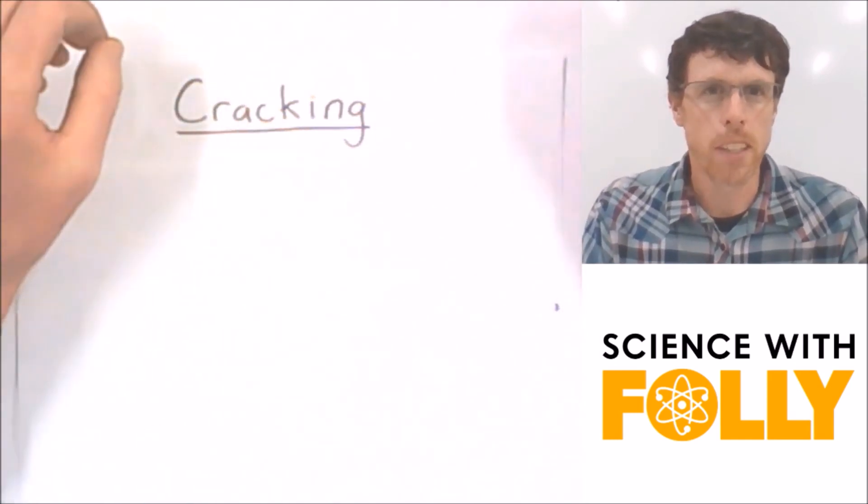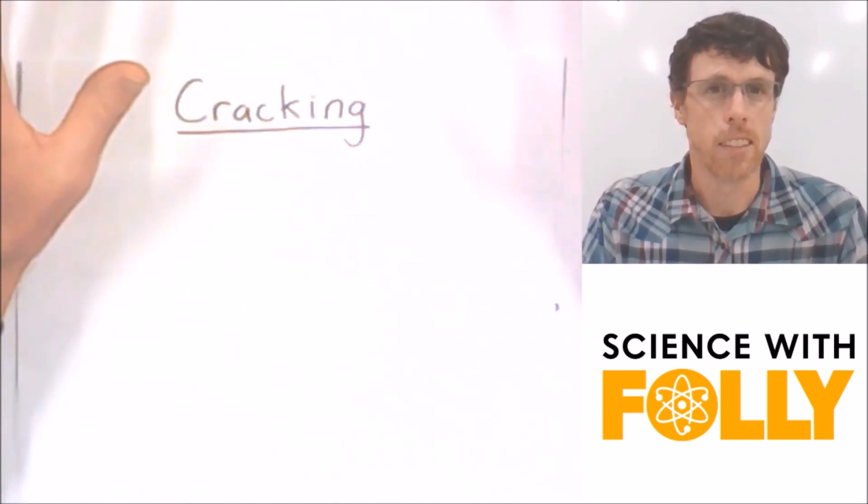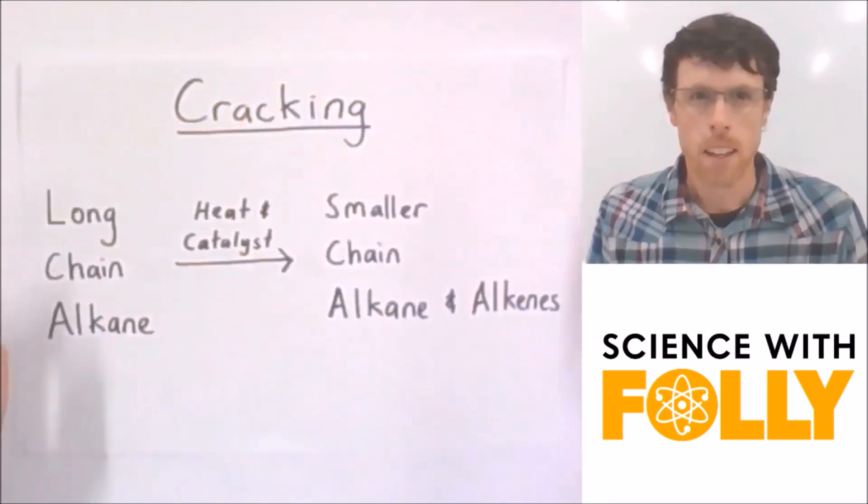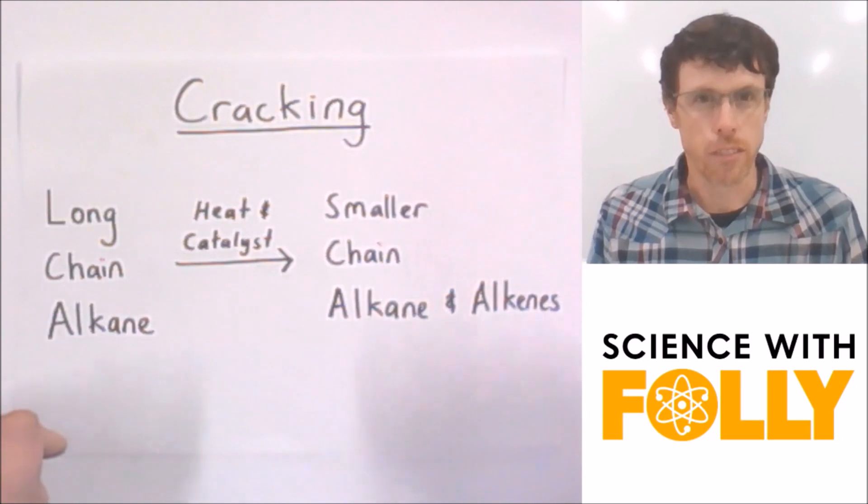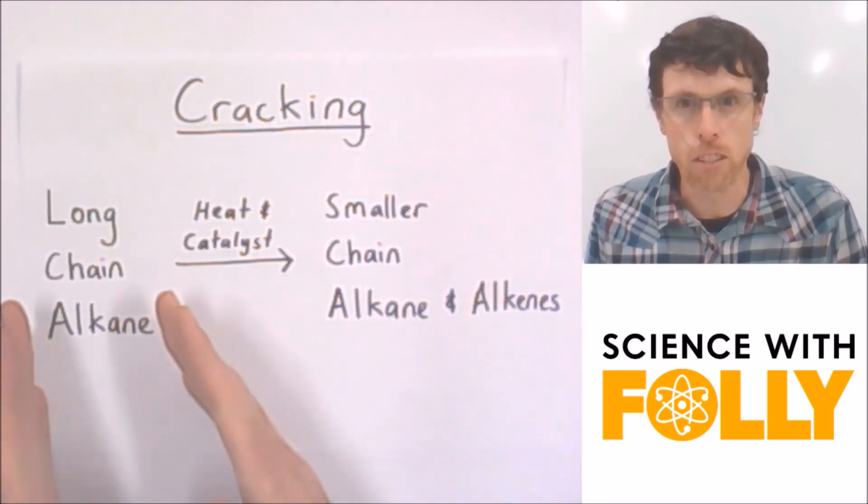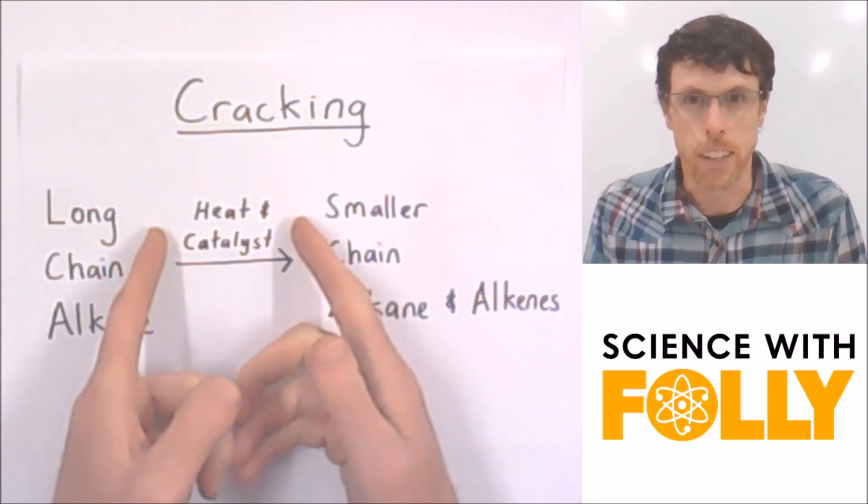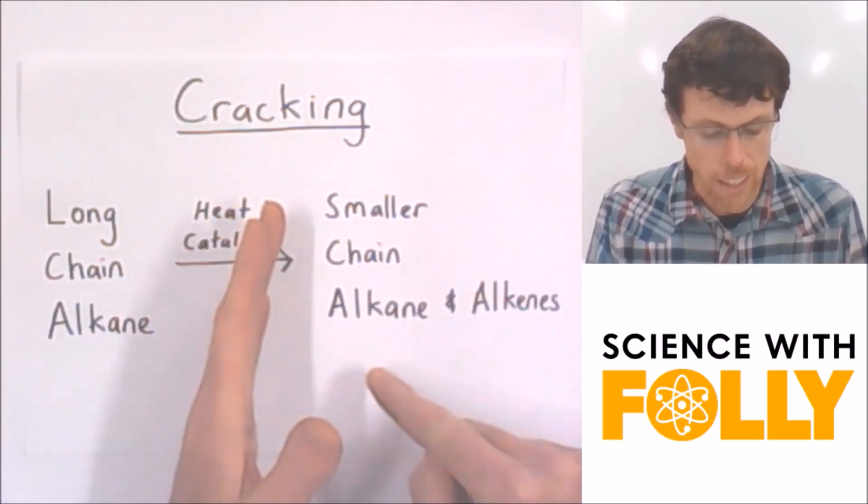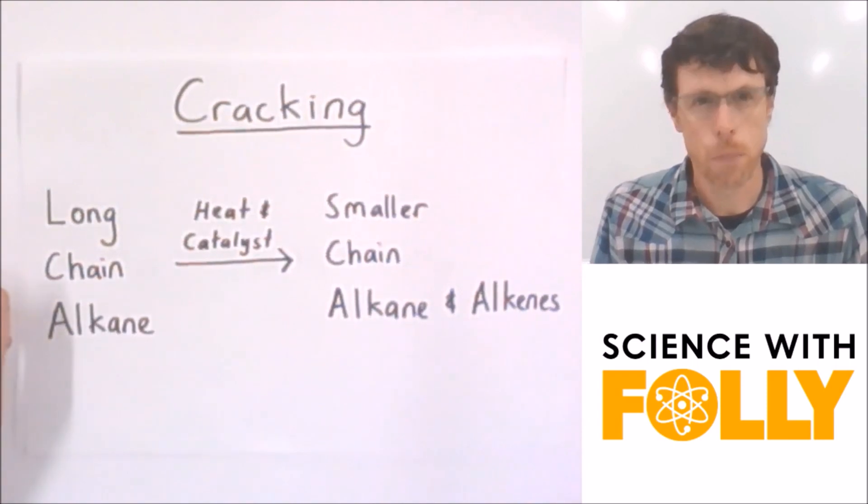Cracking is the name for breaking apart long-chain alkanes into smaller chain alkanes and alkenes. Here's a general reaction for cracking. You can see we have a long-chain alkane. We've got heat and a catalyst and it results in smaller chain alkanes and alkenes. Pretty simple.